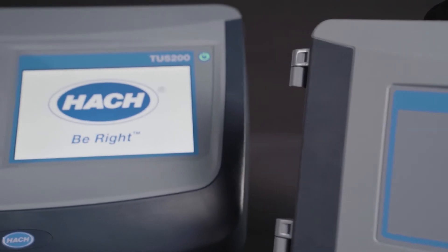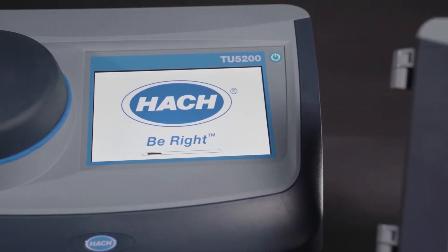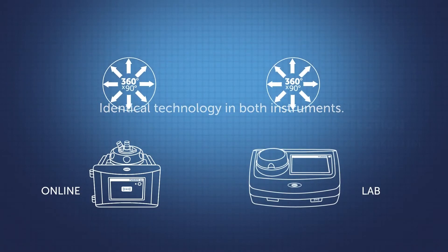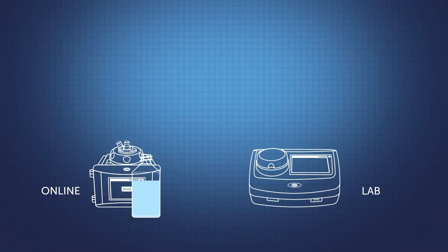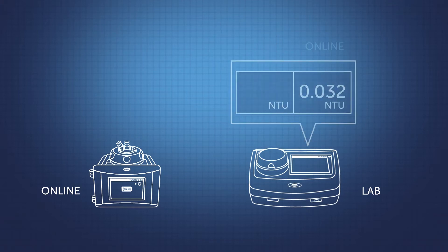One of the advantages that TU5 has is that it's shared optics with both the laboratory and the process instrument. So you're able to verify your results more carefully with your laboratory and get a really good comparable value.